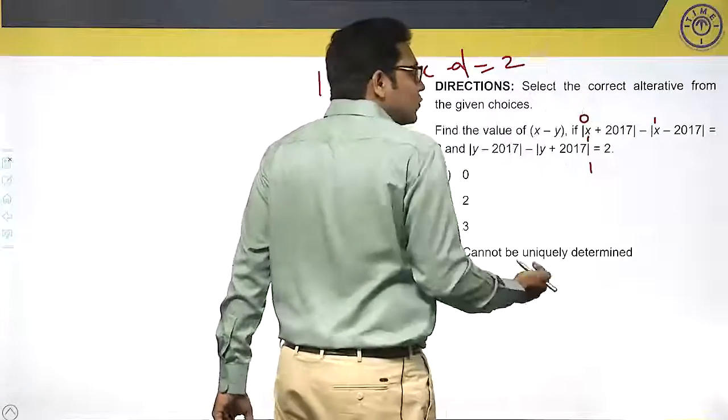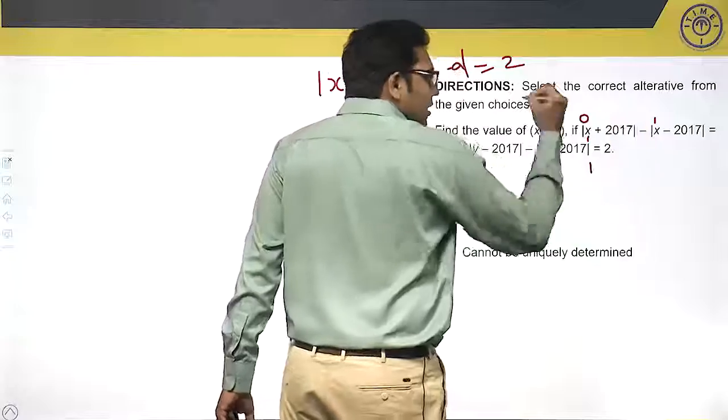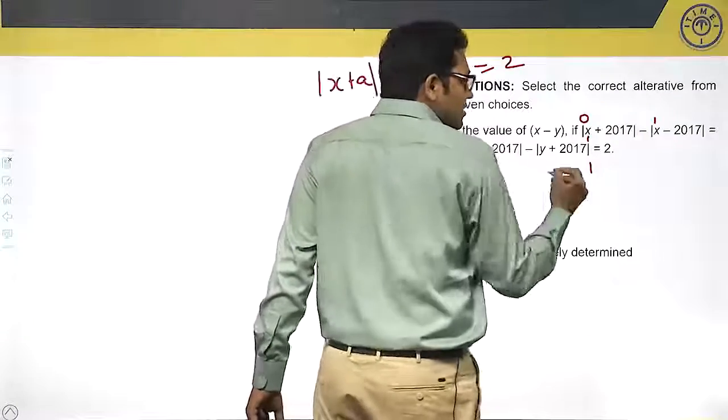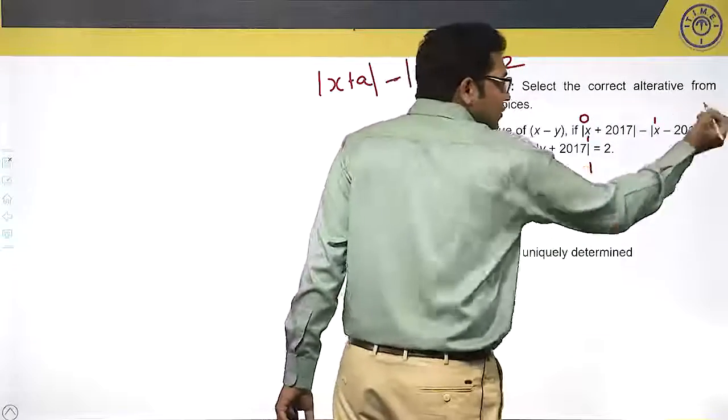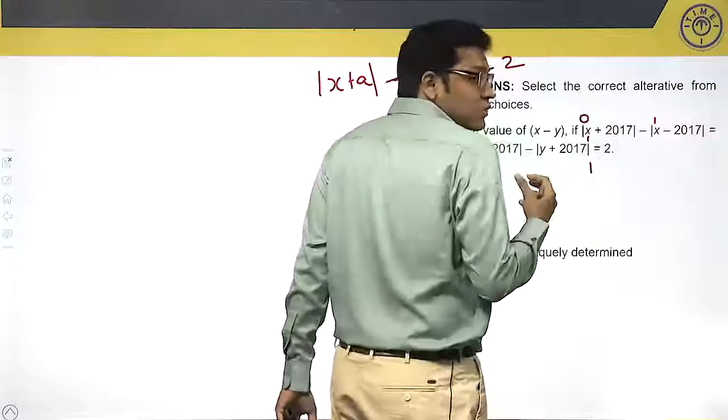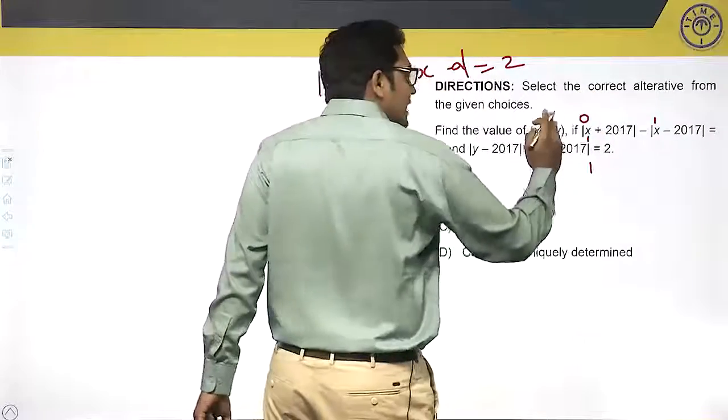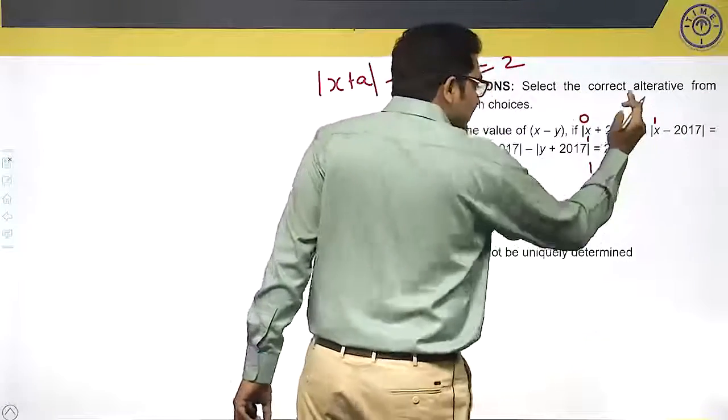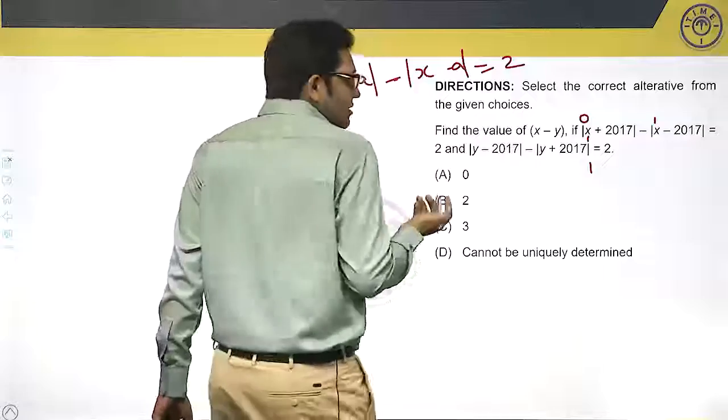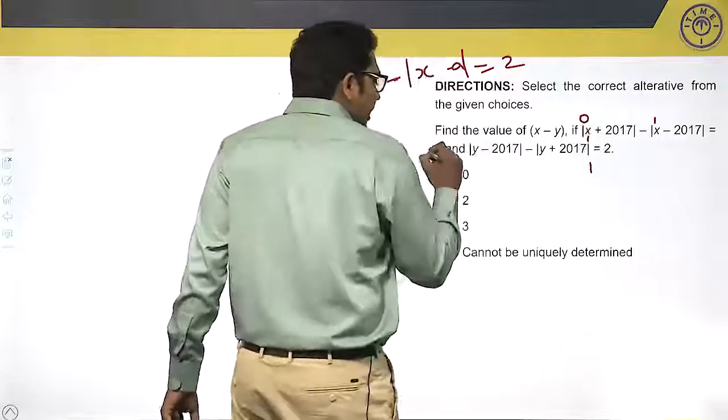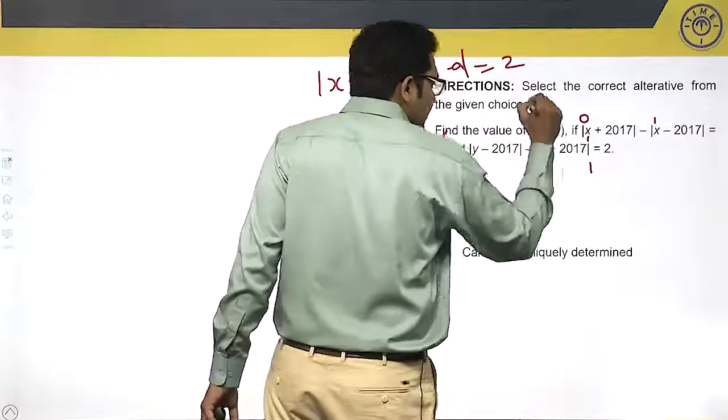Similarly, if x is -1, 2017 - 1 = 2016, and -1 - 2017 = -2018. 2016 - 2018 = -2. So when we increase x, the value increases. When we decrease x, the value decreases. Therefore, when x equals 1, the value satisfies. So x is 1.